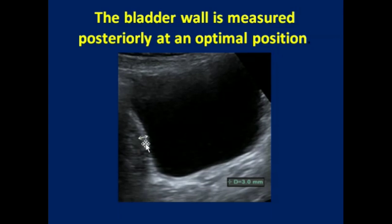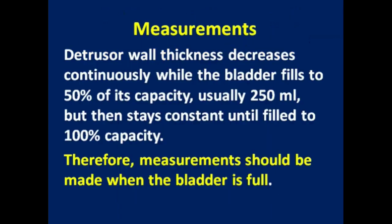This is the image — the bladder wall is measured posteriorly at an optimal position. In this image, the thickness of the wall is three millimeters. The bladder wall thickness decreases continuously while the bladder fills to 50% of its capacity, usually 250 ml.